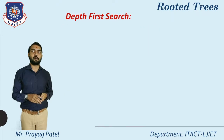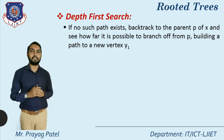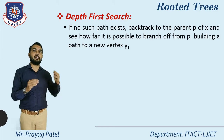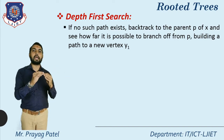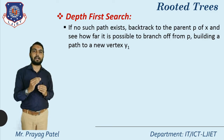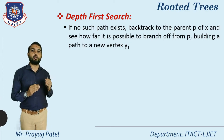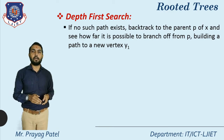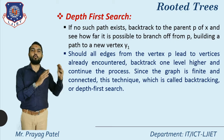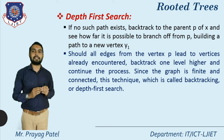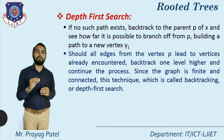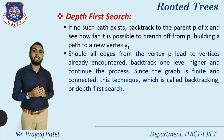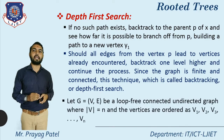This is the scenario for depth first search. If no such path exists, backtrack to the parent p of x. From x, if another path is not possible, backtrack to the previous node — the parent of x — and see how far it is possible to branch off from p, building a path to a new vertex y1. If all edges from vertex p lead to vertices already encountered, backtrack one level higher and continue. Since the graph is finite and connected, this technique is called backtracking or depth first search.